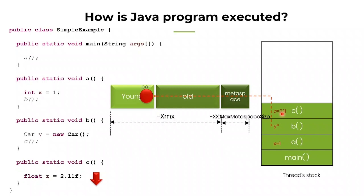This brings up a question: I can set the maximum size for my young generation and old generation through XMX, and I can also set the maximum metaspace size using the JVM argument max metaspace size. Is there an argument to set the limit on my thread stack size? The answer is yes — that argument is XSS, the thread stack size. You can set it to 256 kilobytes, 512 kilobytes, 1 MB, or based on your application demand. But if you set it to a very aggressive value and your stack keeps growing, then you will run into the famous java.lang.StackOverflowError. I have an example to show in just a few minutes.